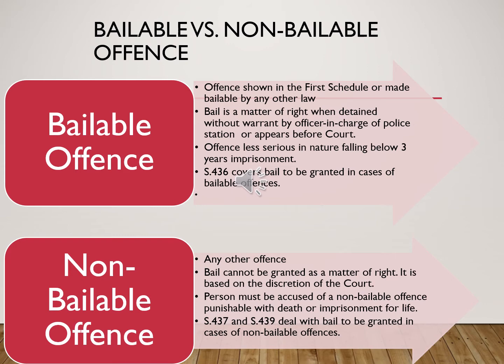Bail can be classified into bailable and non-bailable offences. In the case of a bailable offence, it is an offence shown in the first schedule of the Code of Criminal Procedure or made bailable under any other law. Bail is a matter of statutory right in bailable offences when a police officer arrests without a warrant. Bailable offences are less serious and are punishable with imprisonment up to 3 years. Section 436 deals with the procedure for granting bail in bailable offences. An example is a fray punishable under Section 160 of IPC.